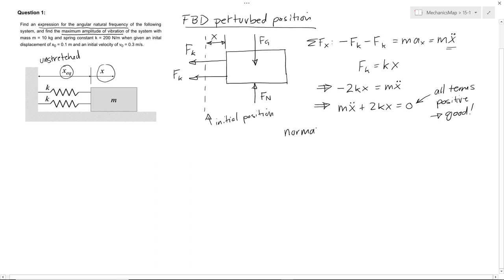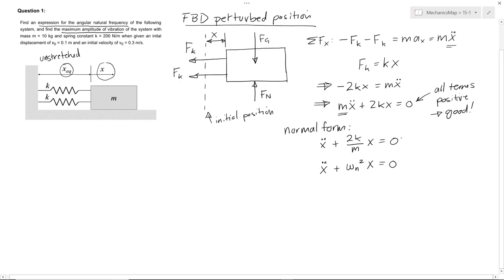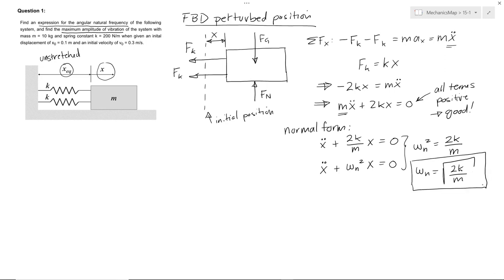So now we're going to write this in normal form. That is, we're going to divide the whole equation by whatever the coefficient is in front of the x double dot term. So we get x double dot plus 2k over mx equals 0. In free undamped vibration, this is always of the form x double dot plus omega n squared, which is the angular natural frequency squared times x equals 0. So from these two equations, we can see that omega n squared is 2k over m. And omega n is then the square root of 2k over m.